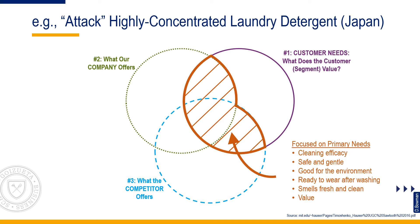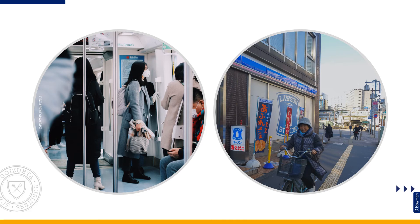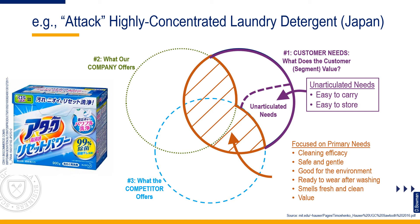It turned out there were several important secondary needs. Japanese consumers did not have the space to store laundry detergent in their apartments and as a result went to the store often. Consumers commonly went by bicycle, by foot, or by crowded subway. Kale recognized an unmet customer need: the need for a small package with the same cleaning power. Kale launched ATAK, a highly concentrated detergent in an easy-to-use, easy-to-store package. Laundry customers were willing to pay a substantial price premium, and within a year, despite the higher price, ATAK captured almost 50% of the Japanese laundry market.